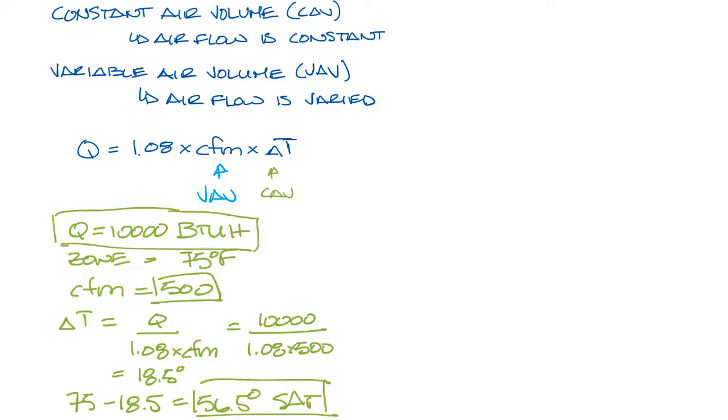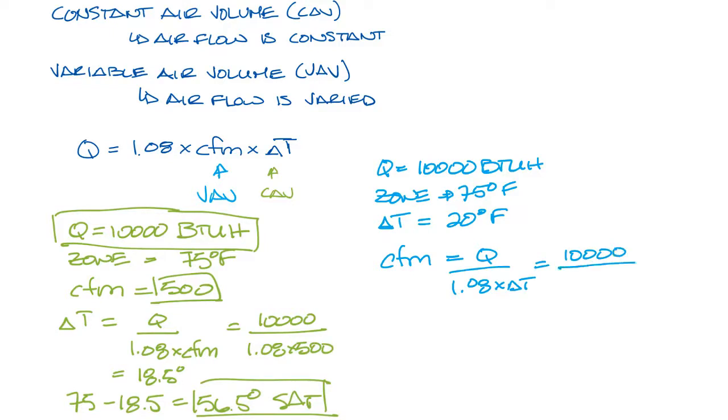Now let's run the load equation again, but instead of setting the CFM, let's set the delta T. Again, 10,000 BTU load and a 75 degree zone. Let's set delta T to 20 degrees. Now we can solve for CFM and get CFM equals Q over 1.08 times delta T. If you do the math on that, you'll find that the airflow is 462 CFM.